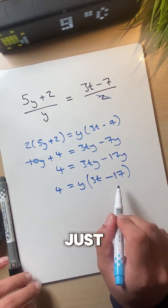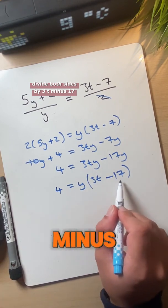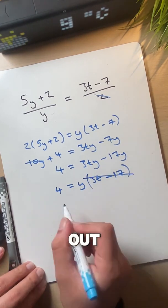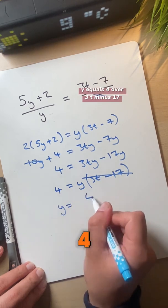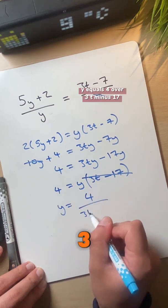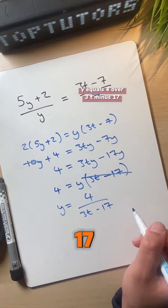Now we can just divide both sides by 3t minus 17, which will mean we can cancel this out. So we're left with y equals 4 over 3t minus 17.